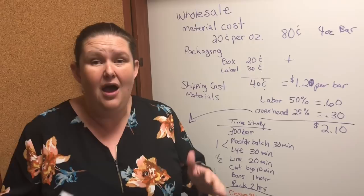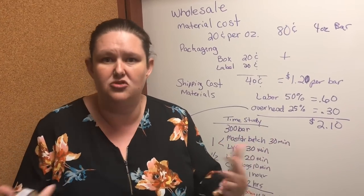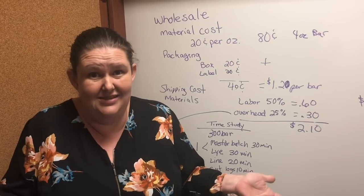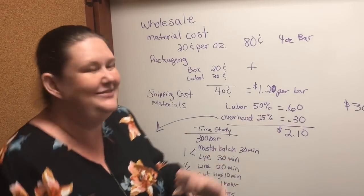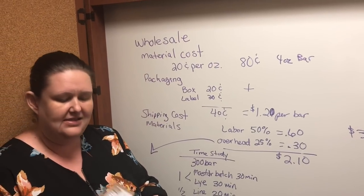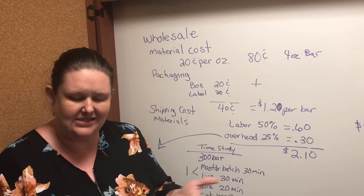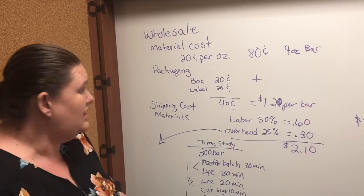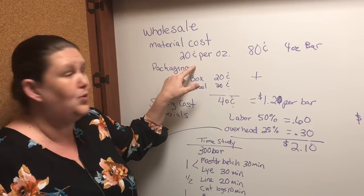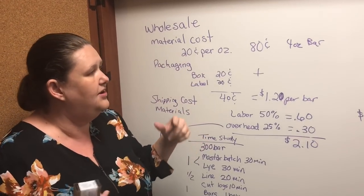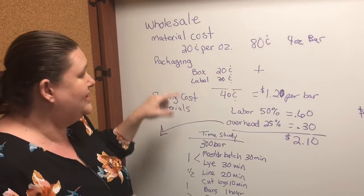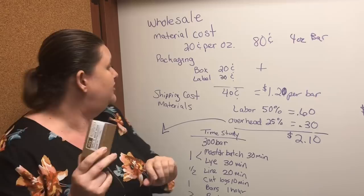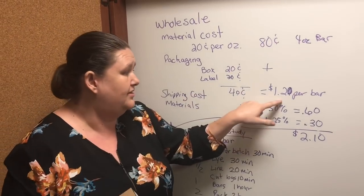I'm getting completely transparent — these are my costs. I purchase everything in bulk, in drums, in large volume. That's how I'm able to get these prices. The secret to lower prices is purchasing more. For this detoxifying wholesale bar soap — one of my more expensive soaps because of the essential oils and goat's milk — the material cost is $0.20 per ounce. It's a four-ounce bar, so that's $0.80. Packaging — the box from Botany Soaps is $0.20, the label is $0.20, so $0.40 for packaging. Total to make this bar: $1.20.